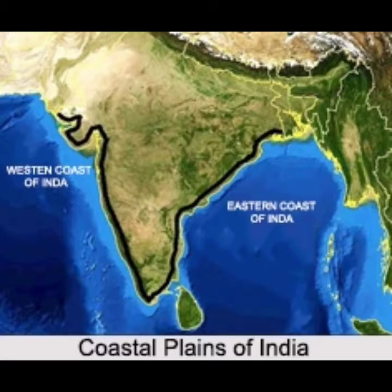Coastal plains are areas that lie along the sea coast. As you can see in the picture — the western coastline and the eastern coastline — all the area around these coastlines is the coastal plain.